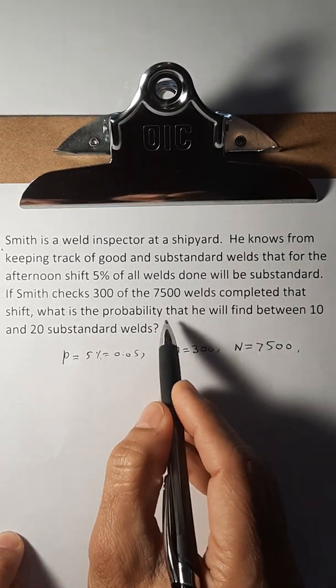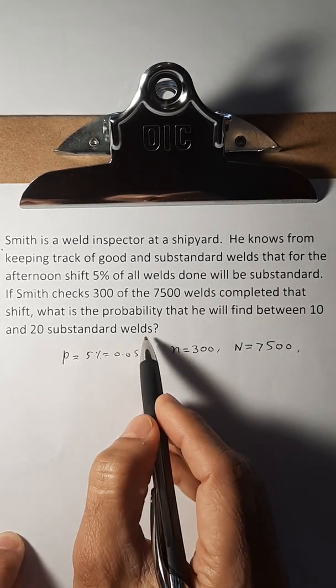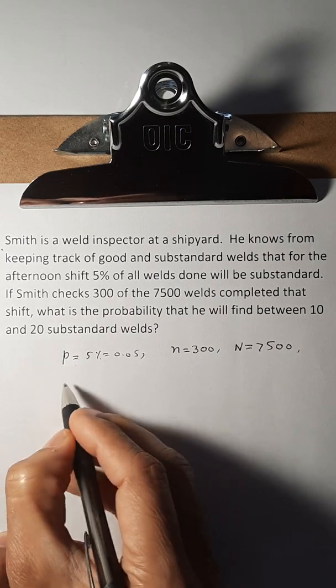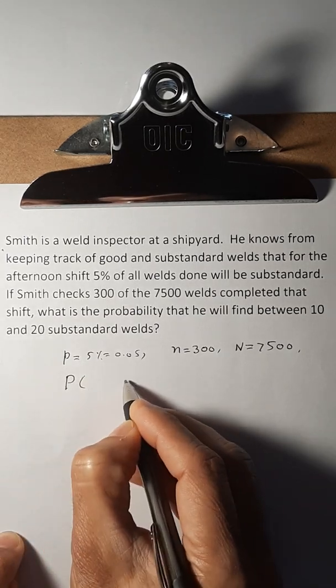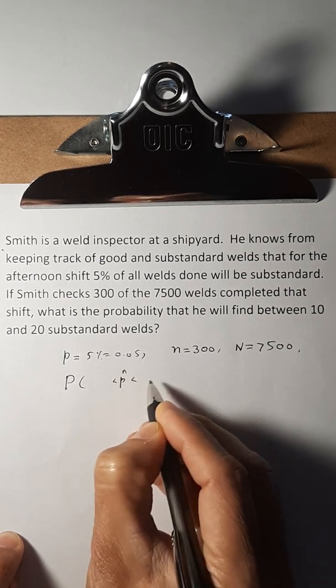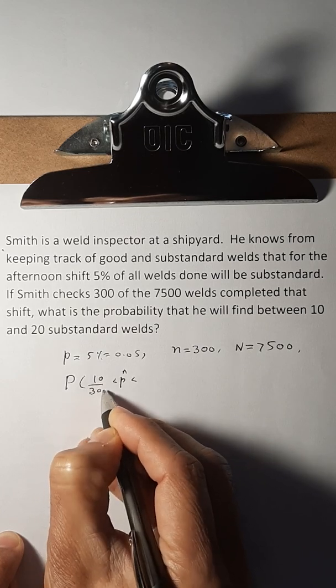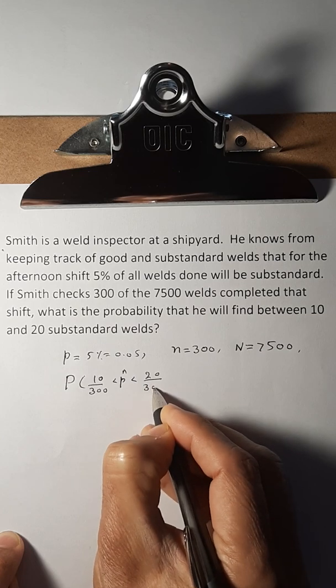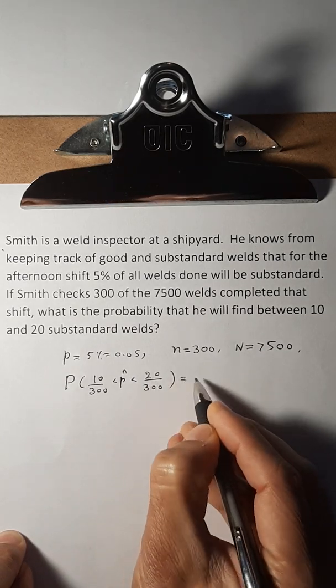We have to find the probability that he will find between 10 and 20 substandard welds, 10 and 20 out of the 300 which he would check. So basically we have to find this probability that the proportion p-hat is between 10 out of 300 welds that he would check and 20 out of 300. So between 10 and 20 out of 300 welds, this is what we have to find.